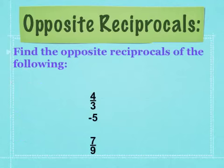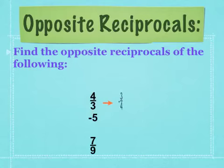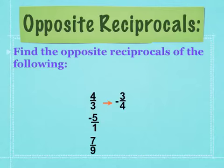Some examples of opposite reciprocals. First, find the opposite reciprocal of 4 over 3. Flip it to get 3 over 4, then negate it. Since 4 over 3 is positive, the opposite reciprocal is negative 3 over 4. Next, find the opposite reciprocal of negative 5. Write it as negative 5 over 1. Flip it to get 1 over 5. The opposite of a negative is positive, so the opposite reciprocal of negative 5 is positive 1 over 5.